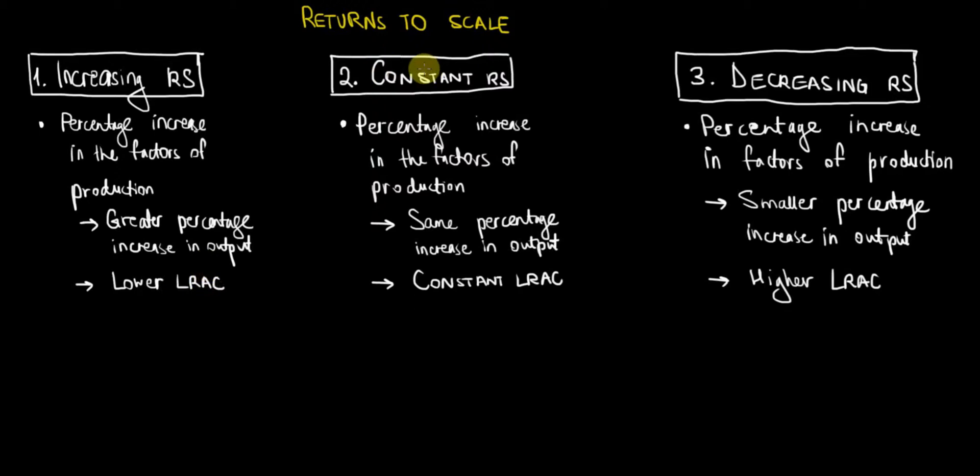Now, constant returns to scale—we're using the same logic, considering the relation between the factors of production and the output. But in this case, a given percentage increase in the factors of production will lead to the same percentage increase in output. As a result, the long-run average costs stay the same—they do not increase nor do they decrease. They are constant.